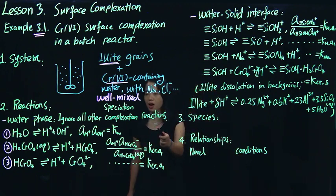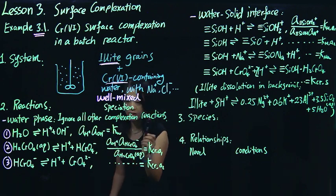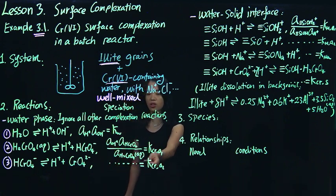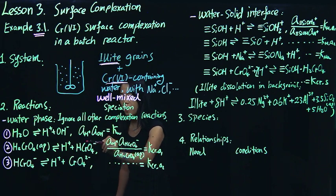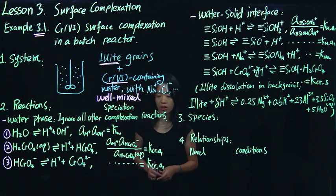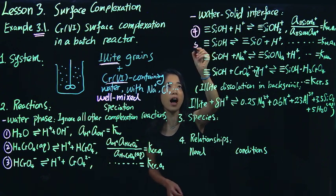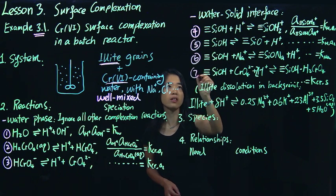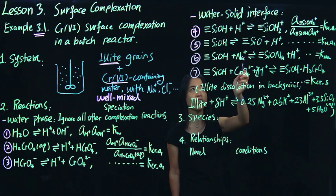You probably notice that for each reaction here, we write the same type of law of mass action as in aqueous complexation — the activity of hydrogen ion and OH⁻ multiplied together equals Kw, and similarly for the chromium reactions A1 and A2. We have three aqueous phase reactions and another four reactions at the water-solid interface, each with a law of mass action expression.